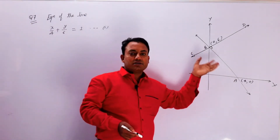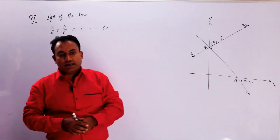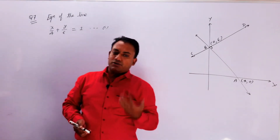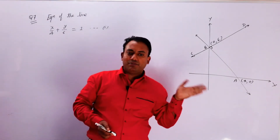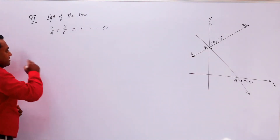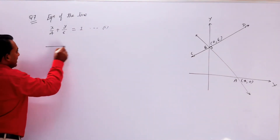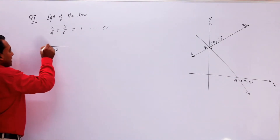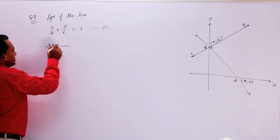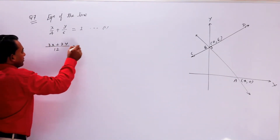लेकिन हमें slope नहीं पता, वो हम AB की help से पता करेंगे, क्योंकि AB और CD perpendicular हैं। जब 2 lines perpendicular होती हैं, तो उनकी slopes का product minus 1 होता है। तो सबसे पहले बच्चों हम इसे standard form में convert करते हैं — इसका LCM 12 होगा, तो यह हो जाएगा 3x + 2y = 12।